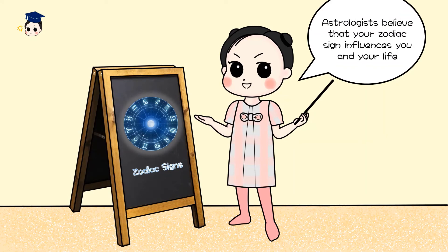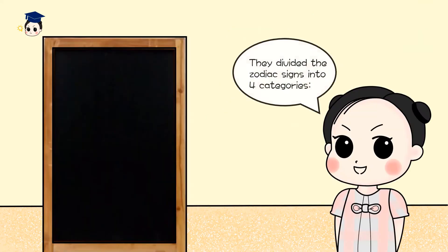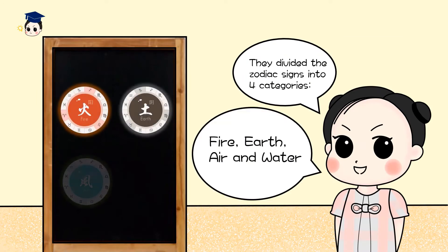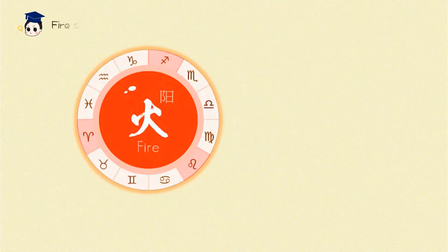Astrologists believe that your zodiac sign influences you and your life. They divide the zodiac signs into four categories: fire, earth, air, and water.